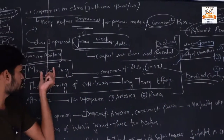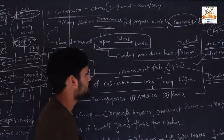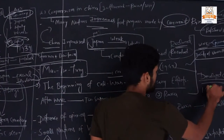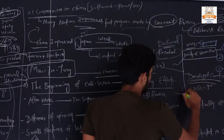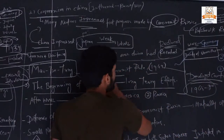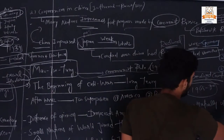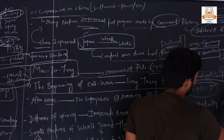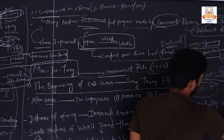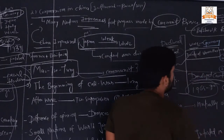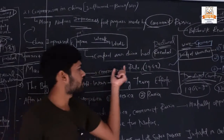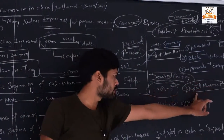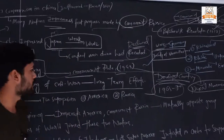Then around 1965 to 1970, Mao Tse Tung was also involved in some Naxal movement, or the Naxalist movement.